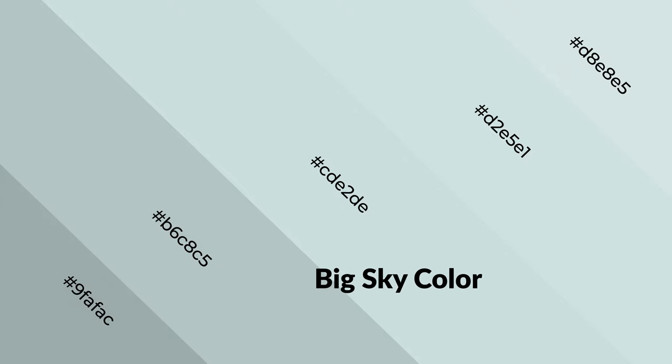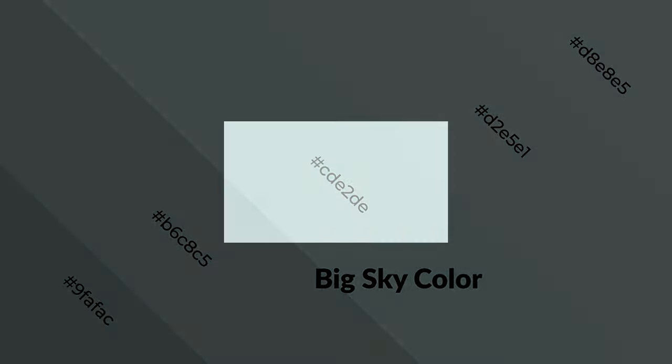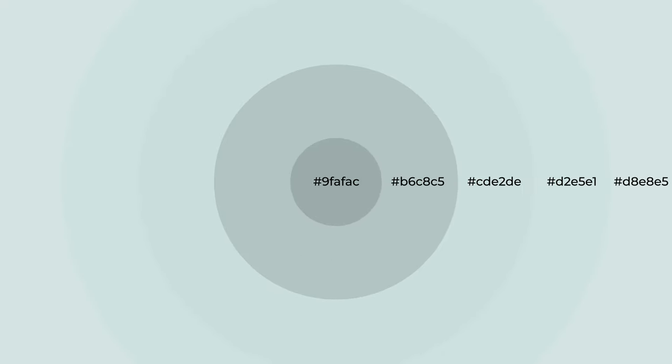Cool colors are like water, ice, sky, grass, soft, and snow. You can see them used in baby products.